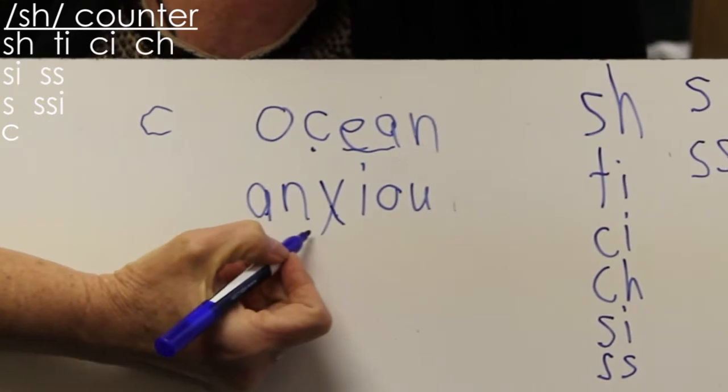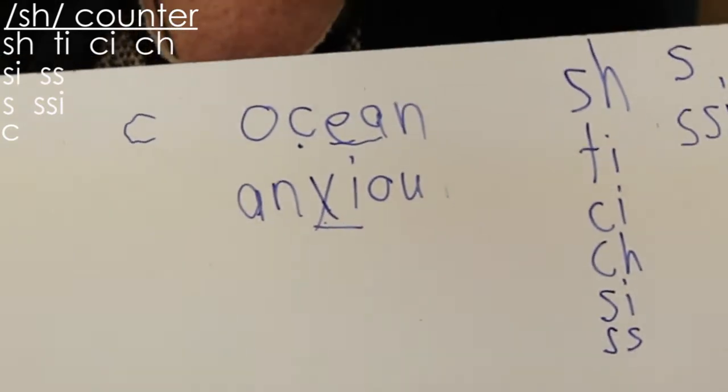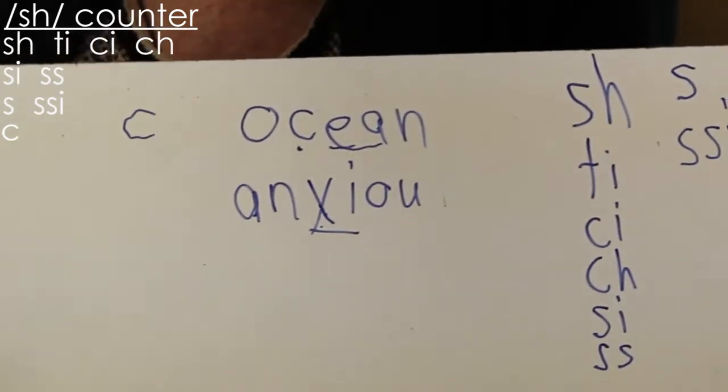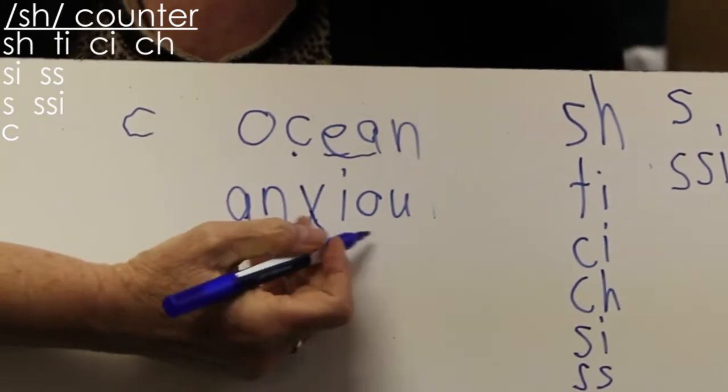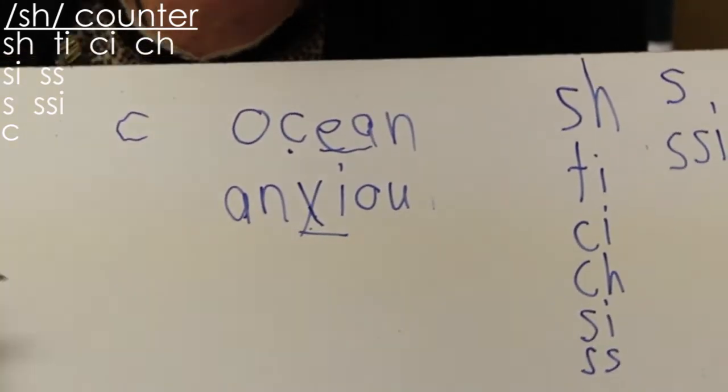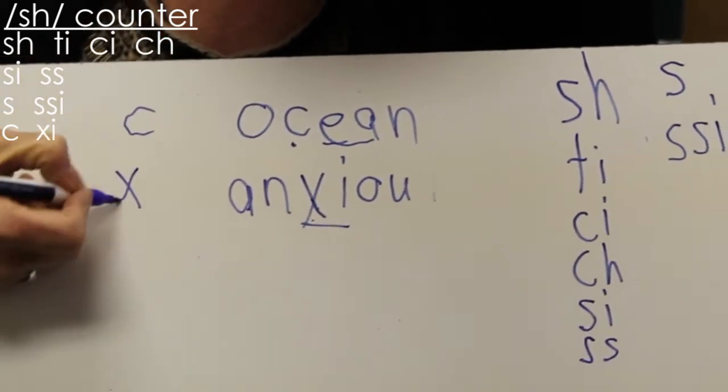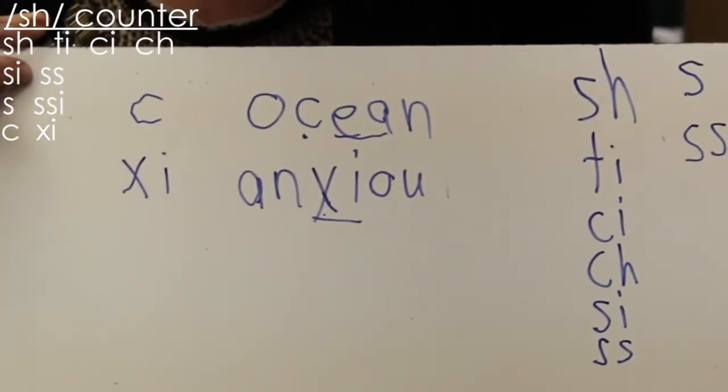It's close. So we have this letter by itself, like in fox. Fox is an x spelling, but in anxious it's a sh, so we stick it in here with our sh anyway. So there's another one.